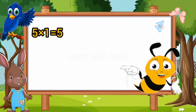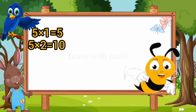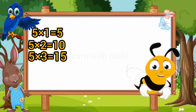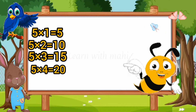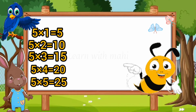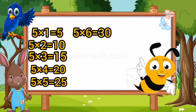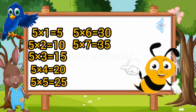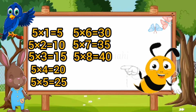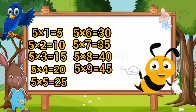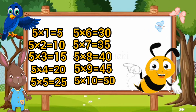5 ones are 5. 5 twos are 10. 5 threes are 15. 5 fours are 20. 5 fives are 25. 5 sixes are 30. 5 sevens are 35. 5 eights are 40. 5 nines are 45. 5 tens are 50.